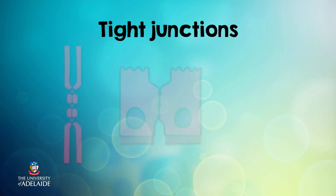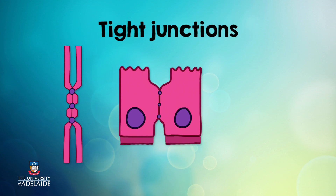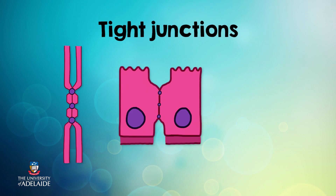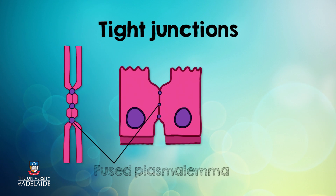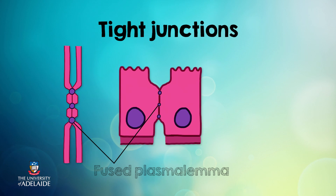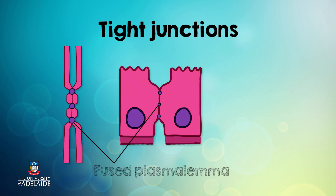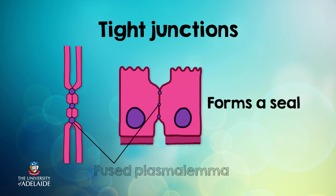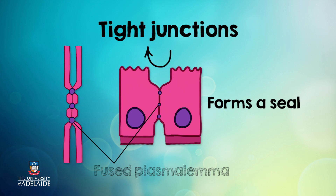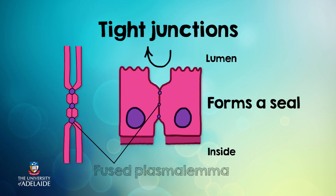Just like its name suggests, tight junctions tightly connect adjacent epithelial cells to each other. This is achieved by fusing the plasmalemma of adjacent epithelial cells, which form an impenetrable barrier. The function of tight junctions is to form a seal that prevents molecules from passing between the two cells. That way, anything on the luminal side has to pass through the cell rather than between the cells.